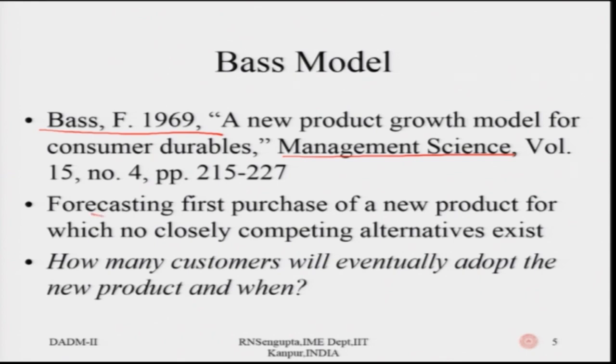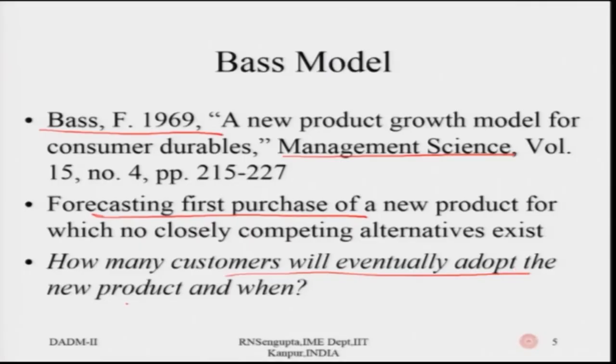The Bass model forecasts the first purchase of a new product for which no closely competing alternatives exist. We assume there are no substitutes for this particular product, though there are now variations that take into consideration substitution effects and game theoretic effects. But to make it easy to understand, we are going to study the standardized Bass model. It aims to answer the question: how many customers will eventually adopt a new product and when? Because as a firm, you have to allocate budgets to development and commercialization of a product. Unless you know there is sustained demand in the market, you may end up in a loss, because many products launched in the market fail to generate the necessary demand and are likely to be shelved by companies.